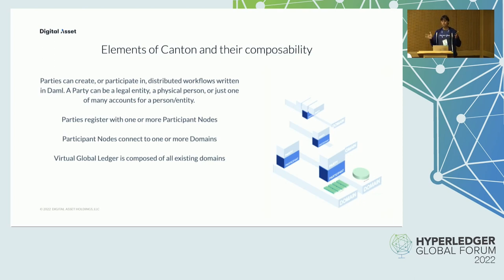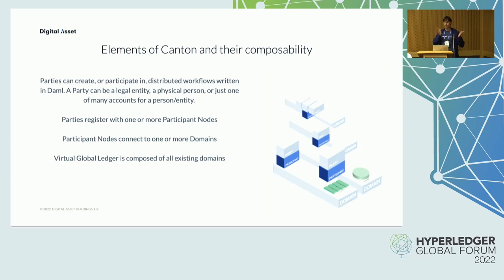DAML and Canton — Digital Asset's core technologies — enable the interface across networks. They provide a platform for building multi-party applications that can run seamlessly across infrastructures with different trust properties, backed by databases, or private or public blockchains. It is the first system to fulfill the key requirement of a network of networks for transfer of value in global commerce.